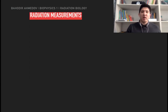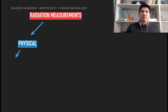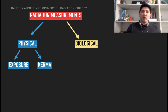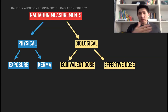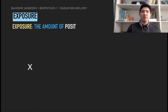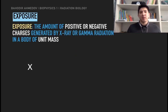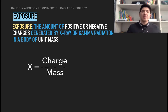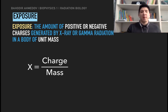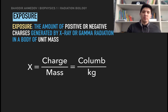We are going to measure radiation differently, either with physical measurements or biologically. There are two types of physical measurements: one is called the exposure, and another is called the kerma. The exposure is the amount of charge, positively or negatively charged, generated by x-ray or gamma radiation in a body of unit mass. We count the charge and divide by the mass of the material. The unit of exposure is coulombs per kilogram.